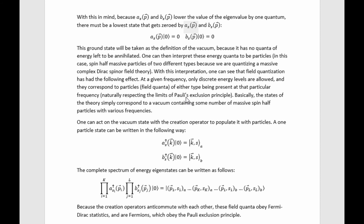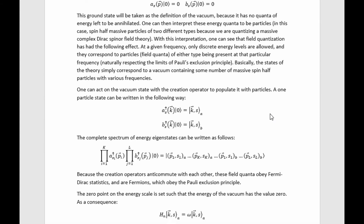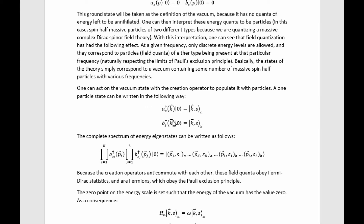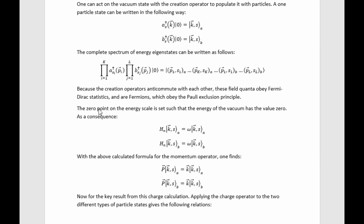No two particles can exist in exactly the same quantum state, so if two electrons have the same momentum, they must have opposite spin. The states of the theory simply correspond to a vacuum containing some number of massive spin-half particles of various frequencies. Acting on the vacuum with creation operators populates it with particles. A one-particle state can be written explicitly, and an arbitrary multiparticle state can be written in this manner. Because the creation operators anticommute with each other, these field quanta obey Fermi-Dirac statistics and are fermions, obeying the Pauli exclusion principle.